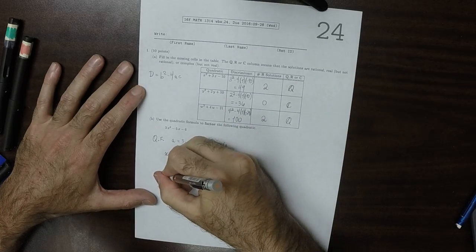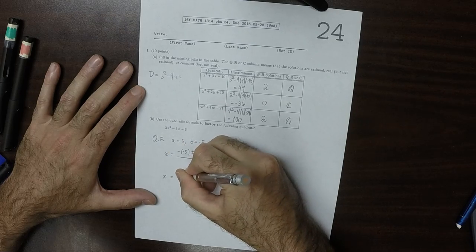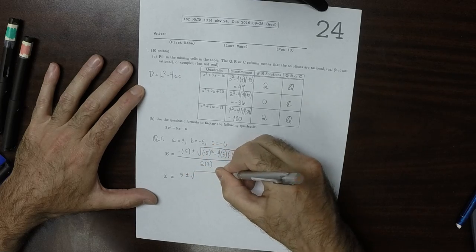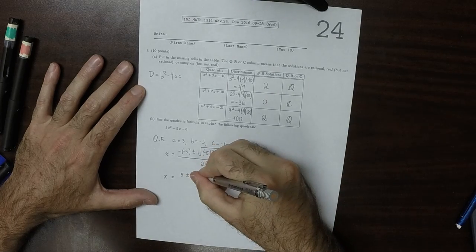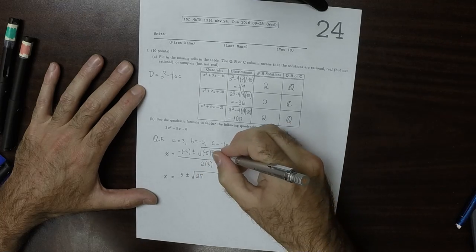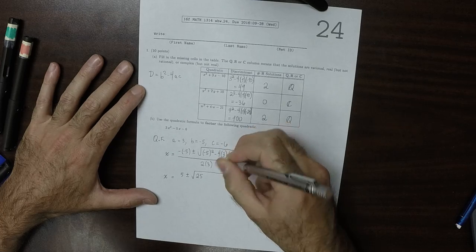So carrying out that arithmetic, that would be 5 plus or minus square root of, well, that would be 25, and then plus 4 times 3 is 12 times 6 is 72.